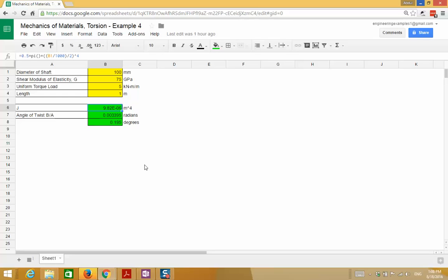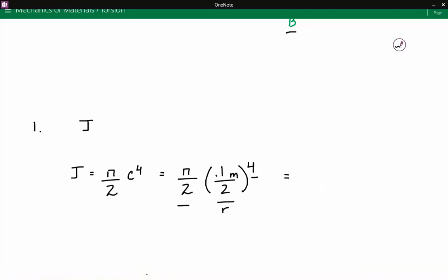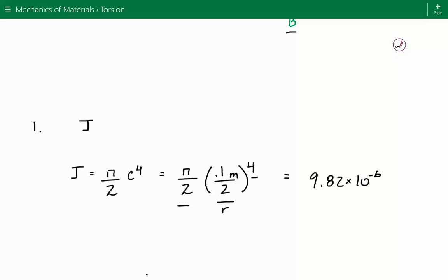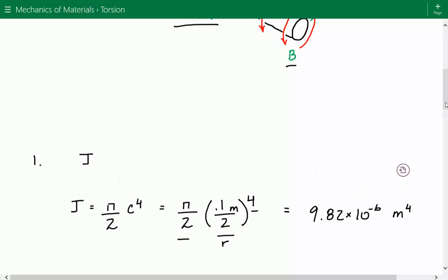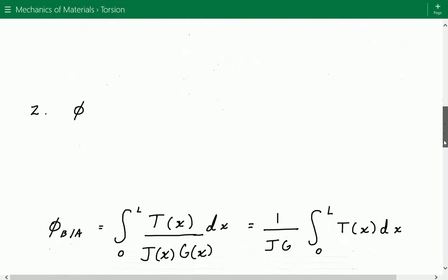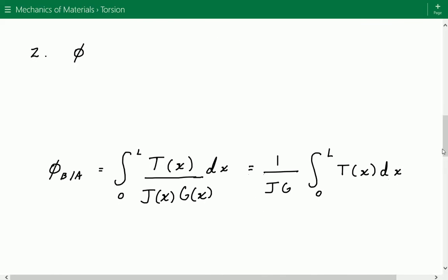So 9.82 times 10 to the negative 6 meters to the fourth power. Now we can calculate the angle of twist using this formula. The angle of twist of B with respect to A equals the integral from 0 to L of the internal torque divided by the polar moment of inertia times the shear modulus.